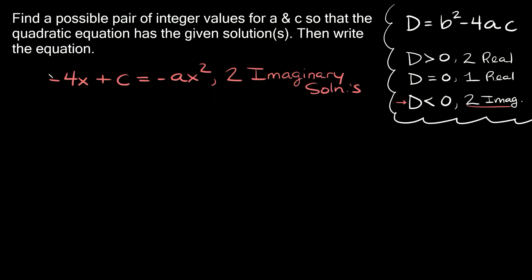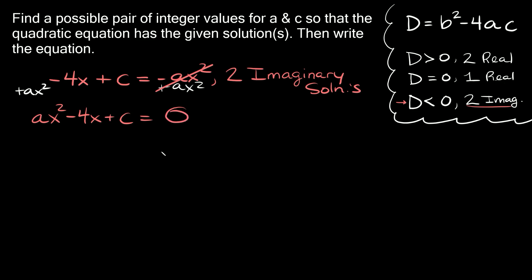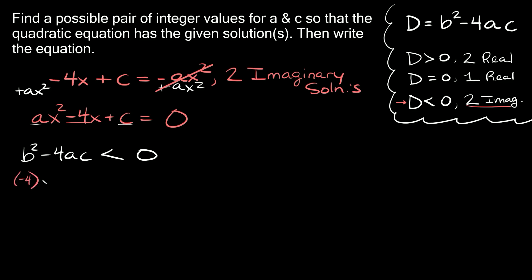Last one: negative 4x plus c is equal to negative ax squared. First, make sure this is in standard form — add ax squared to both sides, giving ax squared minus 4x plus c equals zero. We're told we have two imaginary solutions, so we set the discriminant to be less than zero. Since a and c are both positive, we write b squared minus 4ac less than zero. With b equal to negative 4: negative 4 squared minus 4ac is less than zero.